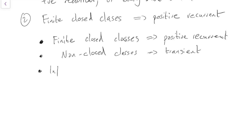Whereas infinite closed classes are the weird ones. They can be any of the three: it can be positive recurrent, it can be null recurrent, and it can be transient. So if you are ever unlucky enough to find yourself with an infinite closed class, it's quite difficult to say. But for everything else, dead easy. Finite closed ones are positive recurrent, non-closed ones are transient.